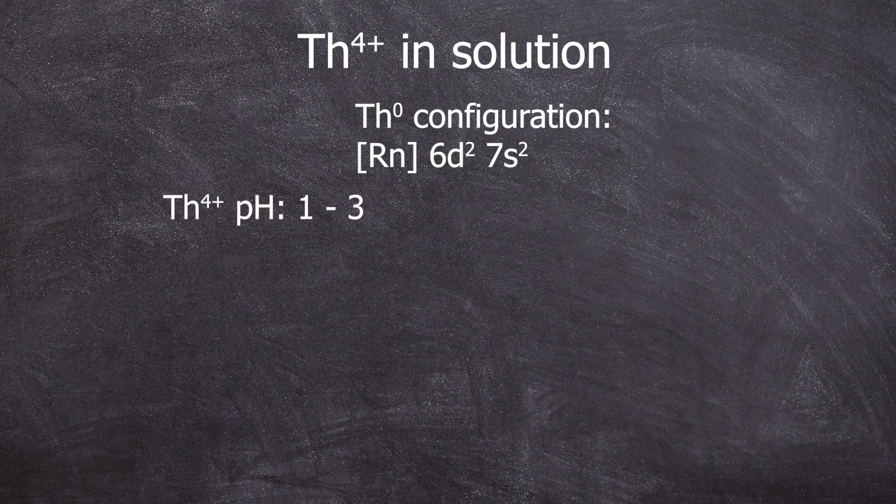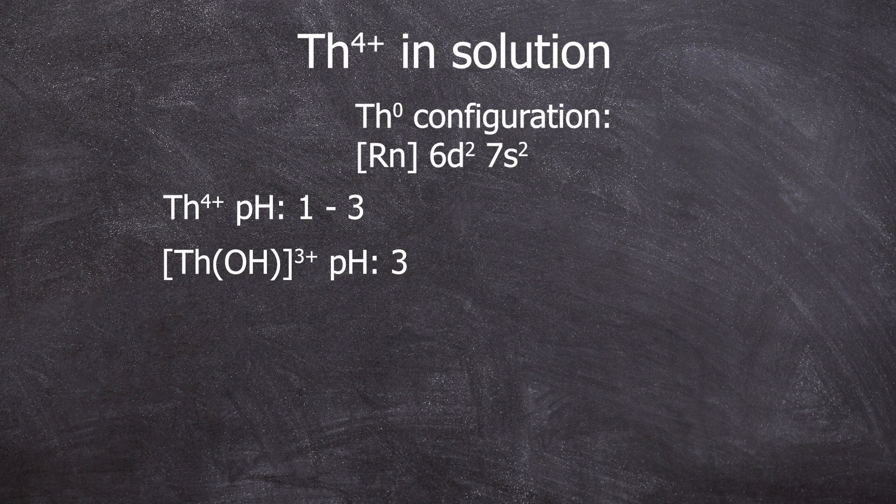Thorium 4 plus only exists in strongly acidic solutions without hydroxide ions coordinated to it. At a pH of 3 or higher we get the first hydroxothorium complexes.